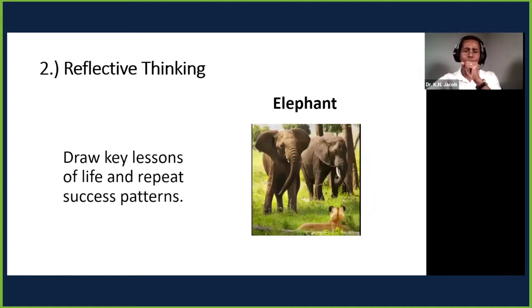Number two: reflective thinking. I'm going to use the elephant for reflective thinking because an elephant takes the same journey over the years across generations. You'll find elephants take the same path generation after generation.